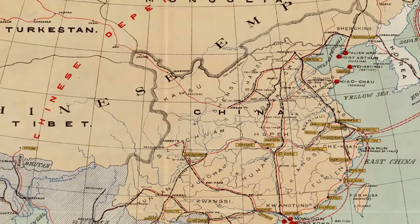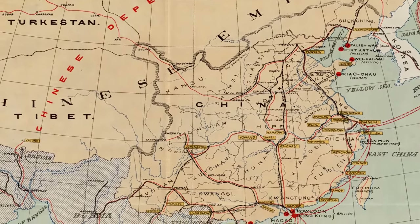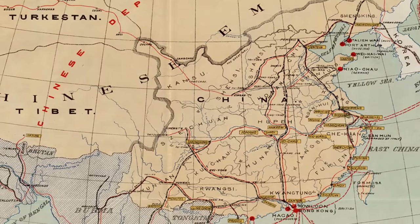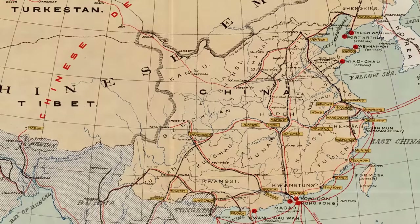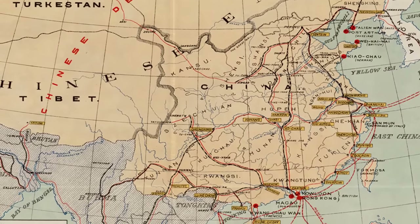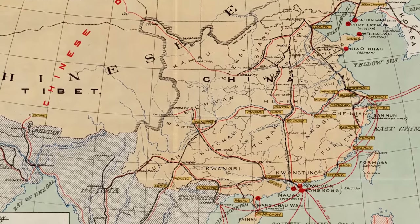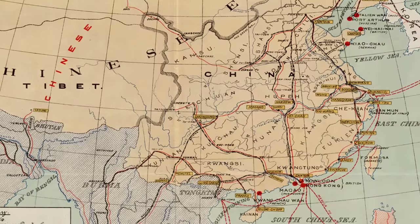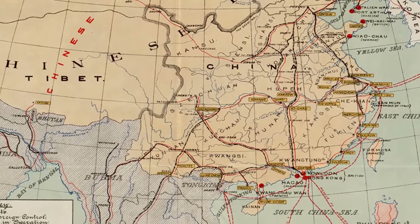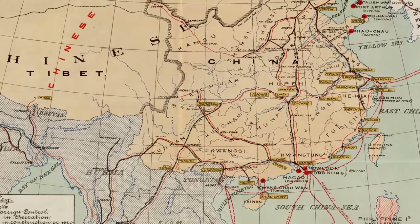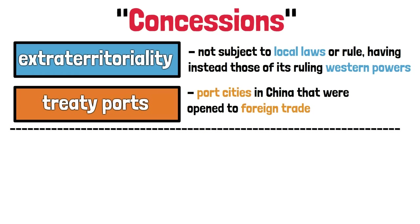These ports existed both on the ocean coast but also throughout the country's rivers. In red dots are the initial ports of full foreign control: Port Arthur and Dalian of the Russians up north, Kiaochao of the Germans, Wei-Hai-Wai, Kowloon and Hong Kong of the British, Macau of the Portuguese, and Guangzhouwan of the French. Although this number grew immensely and had other concessions added to them, as we'll see ahead.